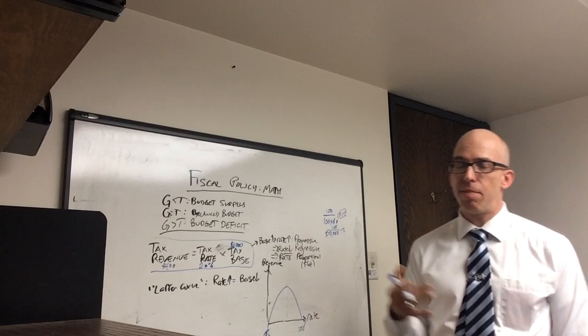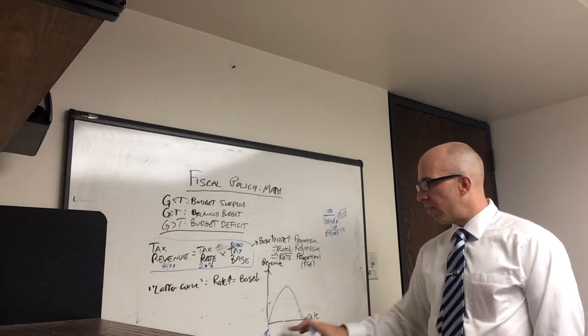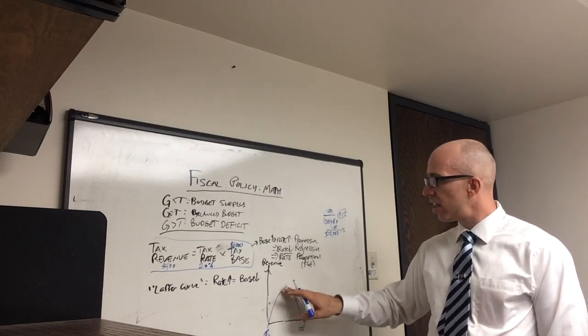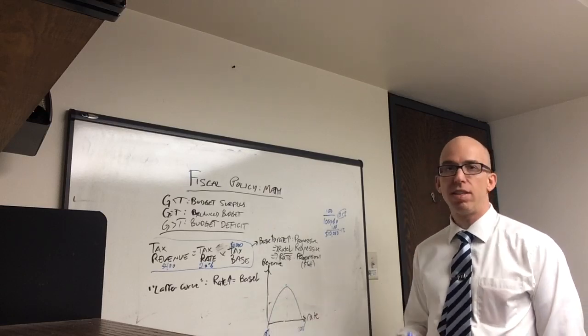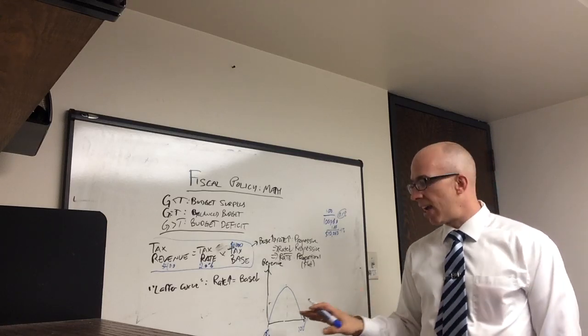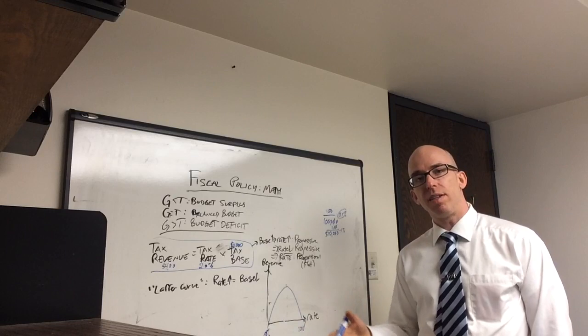But right now the top tax rate is in the high 30s. And so if you're over here, if you're in the low range of taxes, cutting tax rates will actually lower tax revenue. So the U.S. did it when rates were extremely high and it might have worked. But if taxes are already low, it might have the opposite effect.